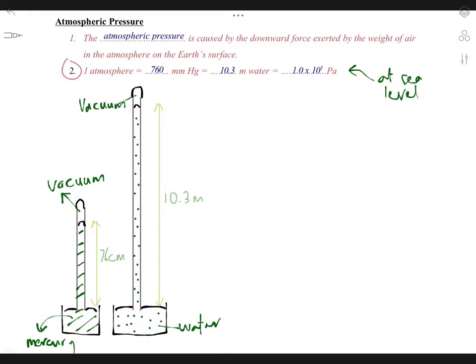Number two: one atmosphere is equal to 760 millimeter Hg, also equal to 10 meter of water, and equals 1 times 10 power 5 Pascal at sea level. So we want to know where do we get these numbers.